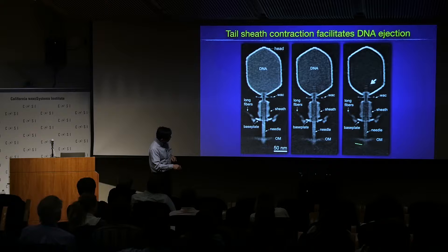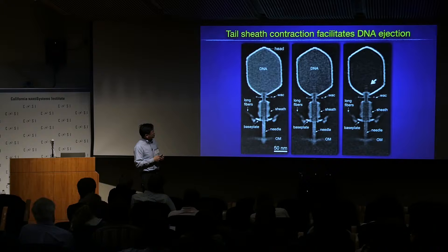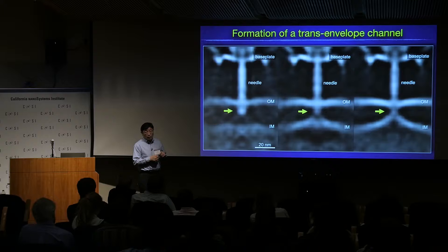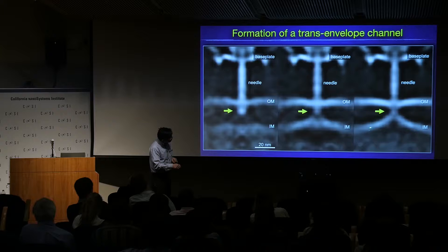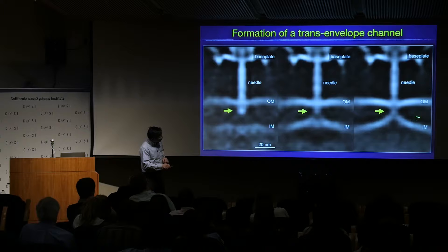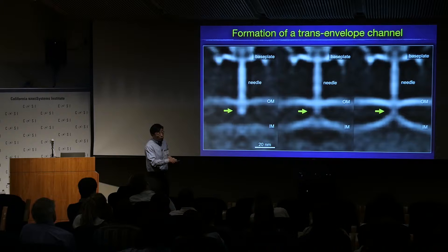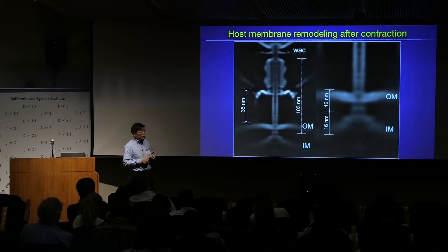By sub-tomogram averaging, you can start to see the phage holding DNA, then starting to release, and ultimately DNA is released into the host cell. However, you can barely see the outer membrane. Where is this channel — how do they actually form this trans-envelope channel? By classifying particles based on the tail, the needle of T4, and the outer membrane region, you notice something really striking.